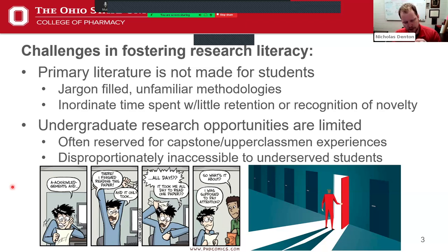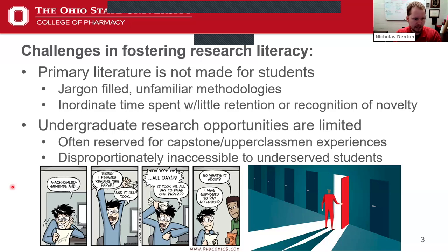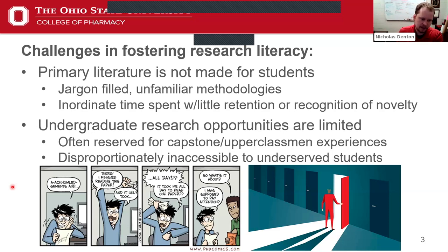One solution is hands-on undergraduate research experience, but those opportunities can be very limited. A lot of undergrad research opportunities are reserved for capstone projects or upperclassmen who have finished their first two years of courses. These experiences are not available to every student, and the students who have trouble accessing undergraduate research are disproportionately our underserved students — our first-gen and underrepresented minority students who may not know the hidden curriculum and channels to get into an undergraduate research experience.